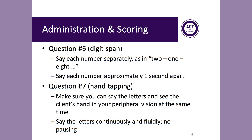Question number six involves digit span. Make sure that you say each number separately — for example, two, one, eight — and say each number approximately one second apart. The administration of question number seven is a little tricky because you need to both fluidly say a string of letters and at the same time keep track of when the patient is responding or tapping to all the letter A's. Make sure that you position the patient's hand closely enough so that you can see their hand in your peripheral vision while you're reading the letters. Once you begin reciting the letters, do not stop — the presentation must be continuous and fluid without pausing.